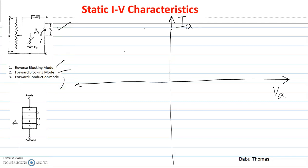First we will be seeing the reverse blocking mode. The thyristor is a PNPN device with three junctions. For the reverse blocking mode, we will be giving the anode a negative supply voltage and the cathode a positive voltage. This will result in junctions J1 and J3 being reverse biased and junction J2 being forward biased.